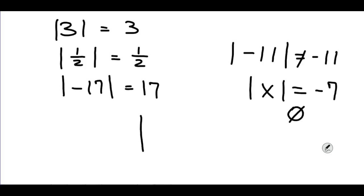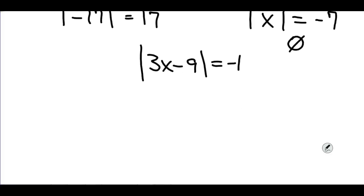Or I could have some very complicated-looking expression, like the absolute value of three x minus nine equals negative one. And as soon as you see that, you say nope — I don't even have to do any work, because I see the absolute value all by itself, and it can never equal negative one. However, if I had something else outside of the absolute value in this same equation, then I can solve this kind of equation.